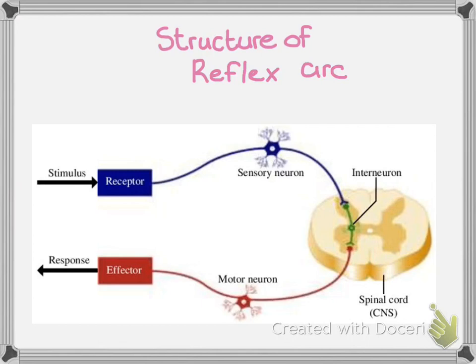Remember, these are the reflexes in your skeletal muscle. We always start with the receptor — that's point one. The receptor then sends information to your sensory neuron, which is point two. Then it is interpreted, and a decision and an action is made by step three, which would be your interneuron, also known as your connector neuron in your textbook.